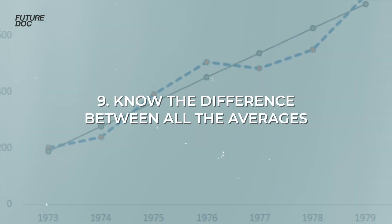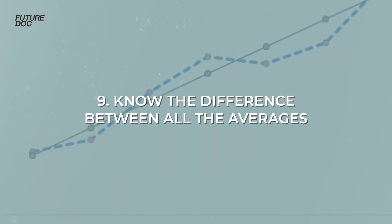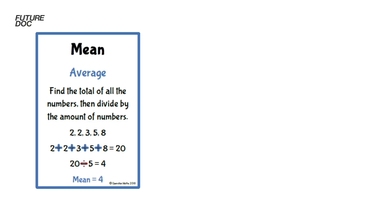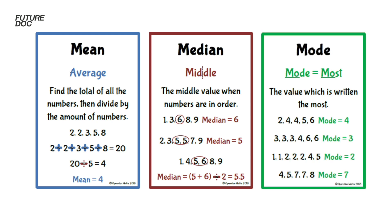Tip number nine is knowing the difference between your averages. The mean is all numbers added together divided by the count of numbers. The median is the middle value when numbers are placed in order. The mode is the most frequently occurring number when placed in order.